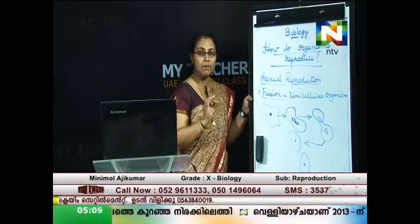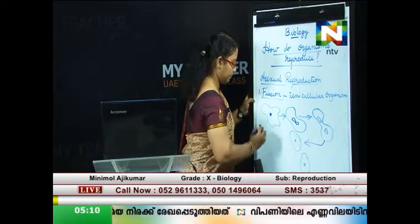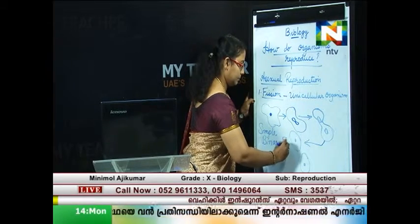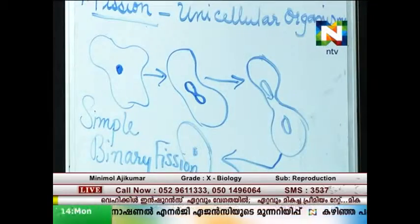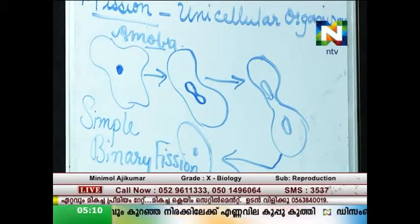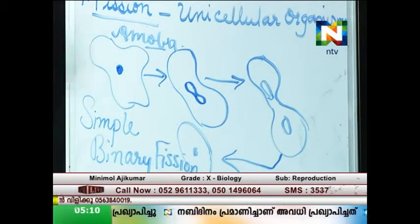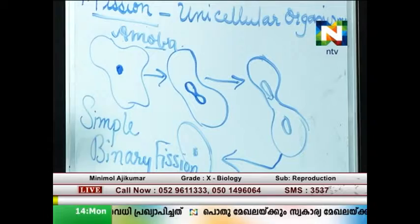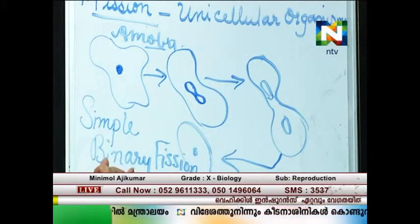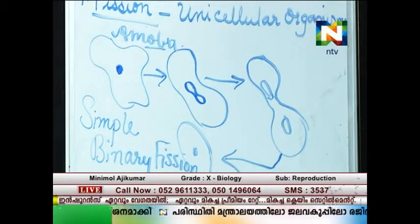This process is called simple binary fission. Unicellular organisms like amoeba reproduce by means of simple binary fission. The single cell, when it grows mature, the nucleus divides into two, followed by division of the cell body, so that two new independent individuals are formed. 'Binary' indicates two — so simple binary fission means from a single individual, two new individuals are formed.